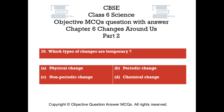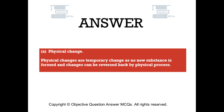Question number 10. Which types of changes are temporary? Option A: physical change. Option B: periodic change. Option C: non-periodic change. Option D: chemical change. The right answer is Option A: physical change. Physical changes are temporary changes, as no new substance is formed, and changes can be reversed back by physical process.